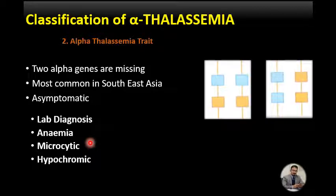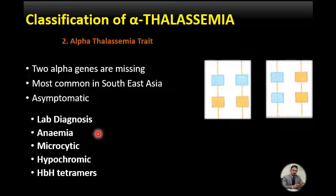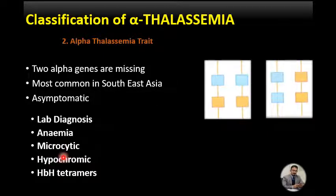The peripheral smear shows microcytic cells with hypochromia; MCV is 60–70 femtoliters. The imbalance between alpha and beta globin chain synthesis results in slightly excess production of HbH tetramers. Newborns often show 5–6% HbBart, which can be a useful diagnostic feature for detecting the trait. HbBart disappears after about three months, as in silent carriers. The only persistent hematological feature in alpha thalassemia trait is hypochromic microcytic anemia — a mild form.